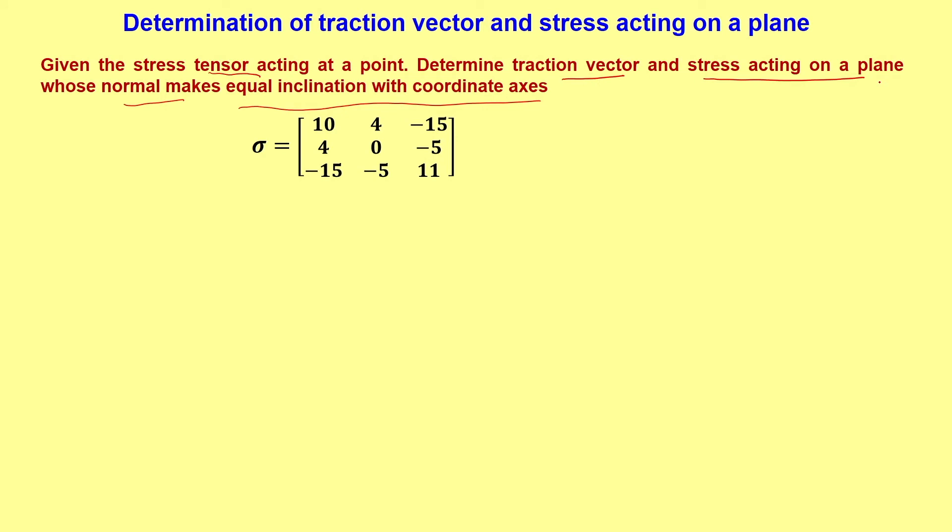For finding out these components, we need to know the normal vector. It is told that it is a plane whose normal makes equal inclination with the coordinate axis. This is similar to that of a space diagonal — a space diagonal makes equal inclination with the axes.